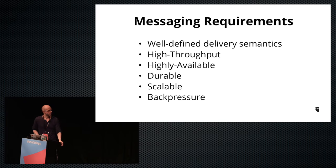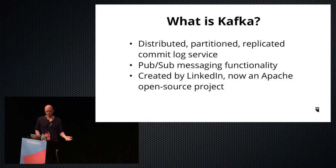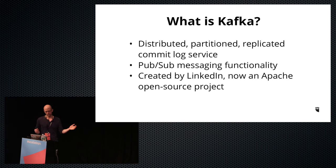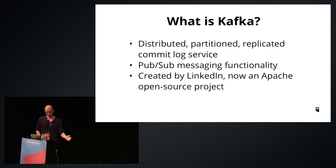There are a lot of different messaging systems out there, and the one I found is really good is called Kafka. So what is Kafka? It's a distributed partitioned replicated commit log service. Think of how a database works with its write-ahead log — it's append-only, with linear reads and writes, which is really fast. It has pub-sub messaging functionality, one-to-many messaging. It was created by LinkedIn but is now a top-level Apache open source project, and there's a company called Confluent that manages it.